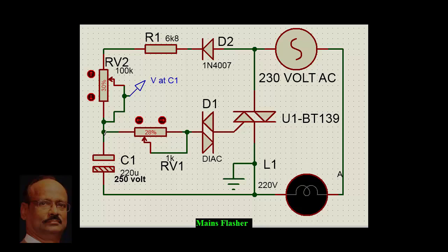After a certain voltage, when the capacitor reaches the breakdown voltage of the diac—we have used about 33 volts—it triggers and discharges the capacitor. After that it charges again. That is how the lamp will flash.